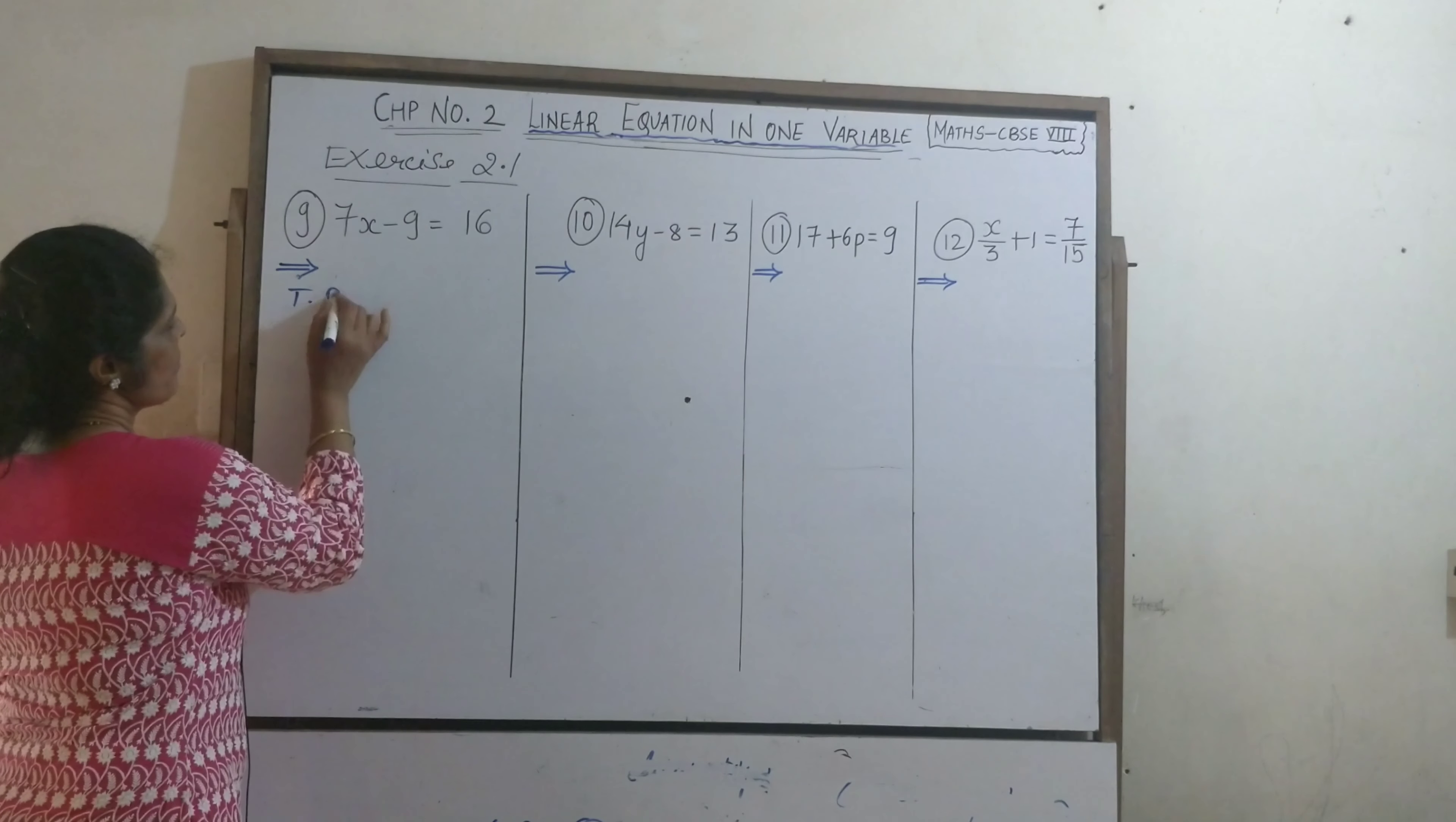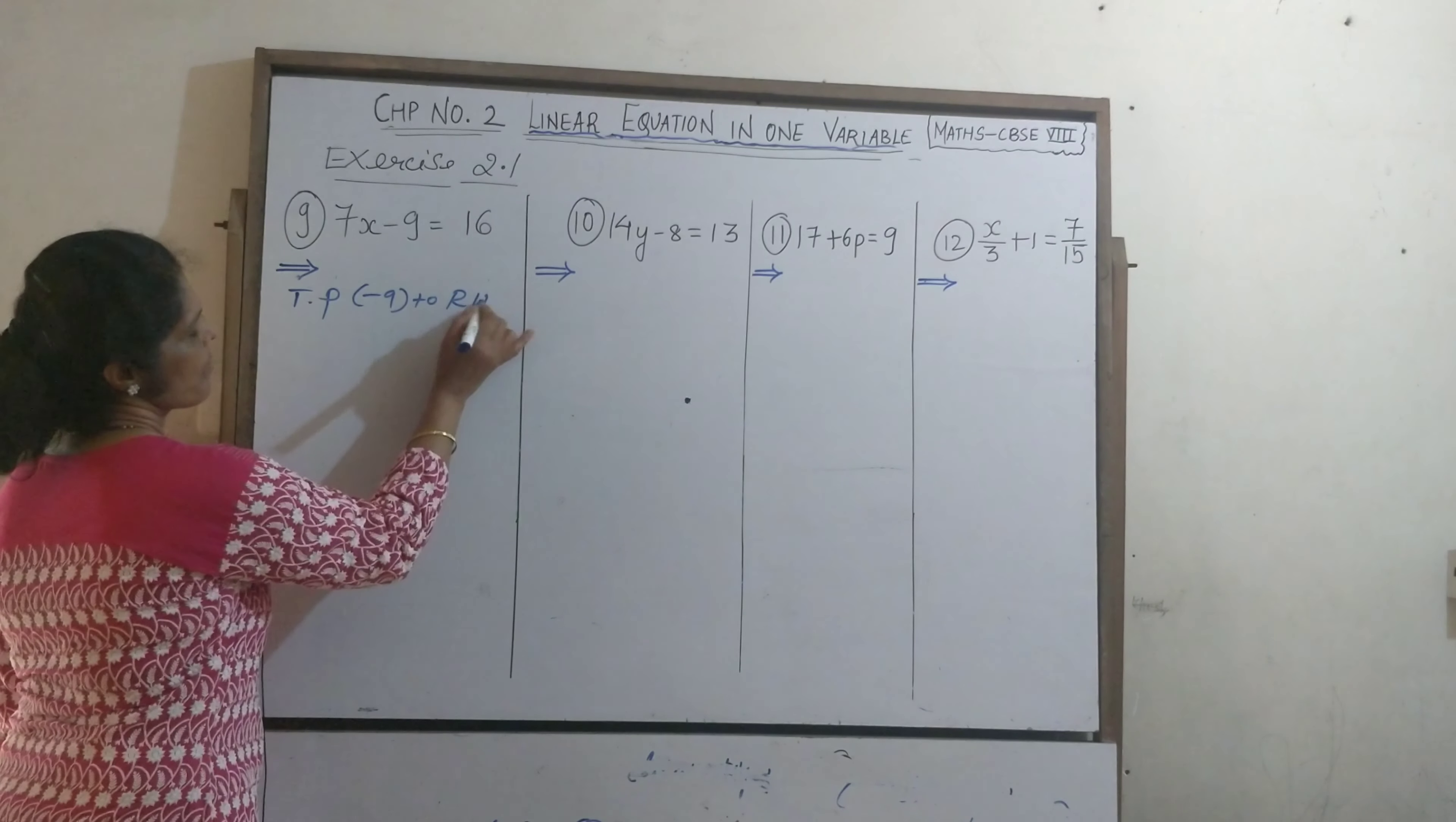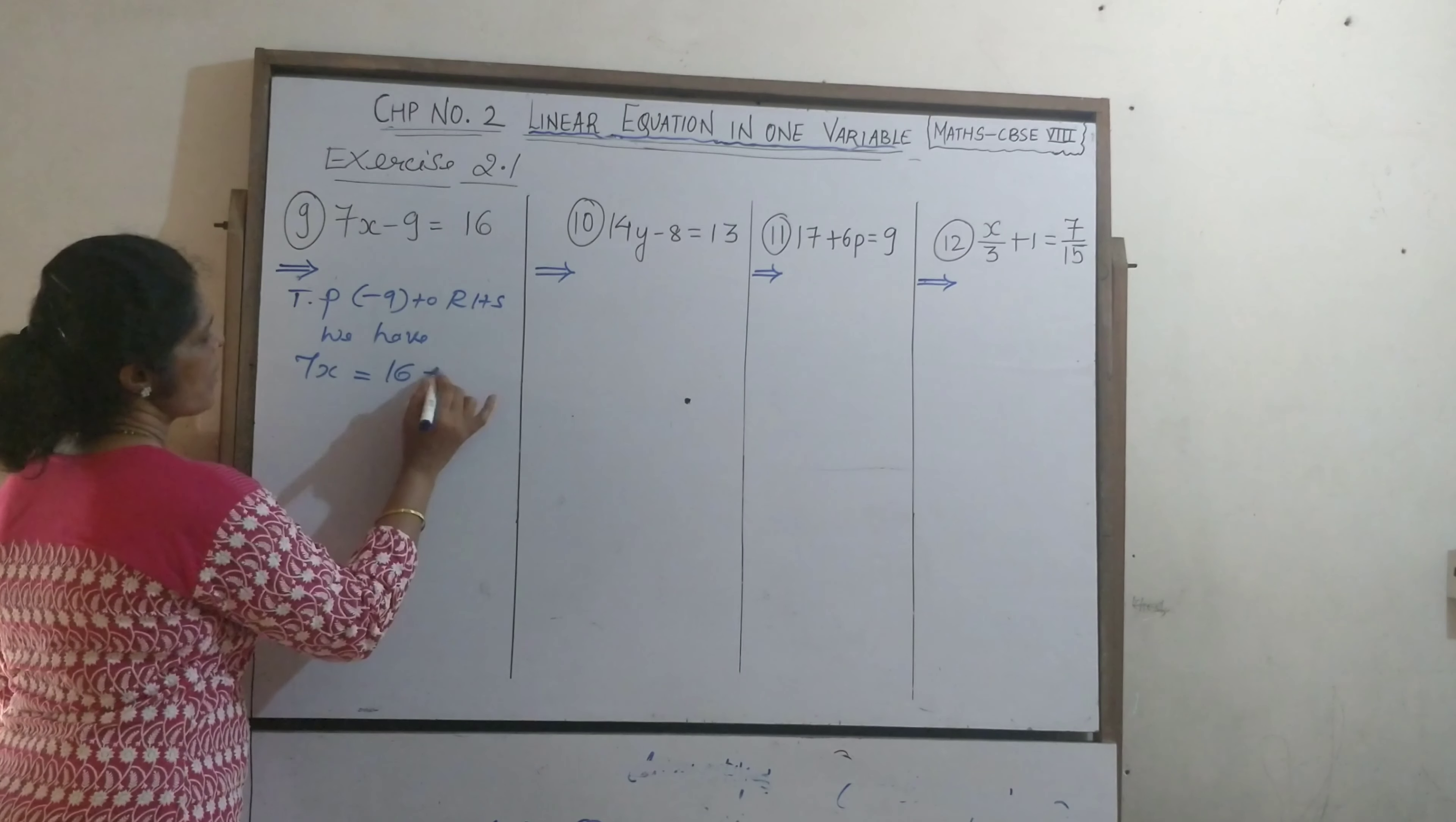Now, transpose minus 9 to RHS. We have 7x equal to 60 plus 9.